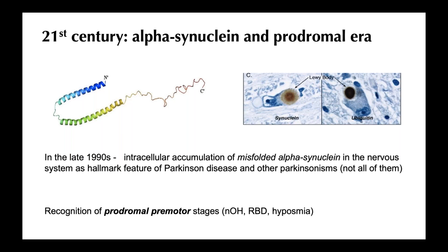That was a film from the 1950s — recognizing Parkinson's disease at that stage is quite easy. But where are we now? We're in the 21st century, the alpha-synuclein and prodromal era. In the late 1990s it was firmly established that the accumulation of a misfolded protein called alpha-synuclein in the nervous system is the hallmark and cause of Parkinson's disease and other Parkinsonisms, though not all of them.